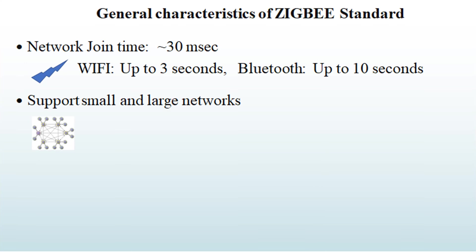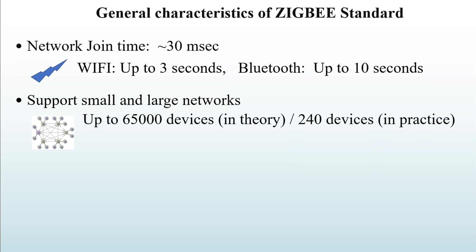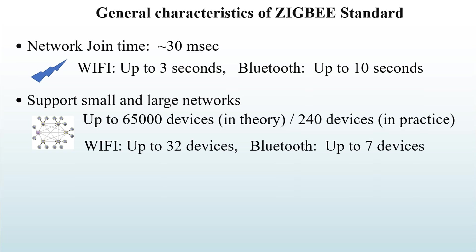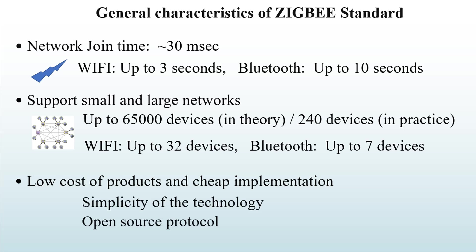Zigbee networks support small and large networks — from several devices to thousands. Zigbee can support up to 65,000 devices in theory, with 240 devices being the practical maximum. Compare this to Wi-Fi's maximum of 32 devices and Bluetooth's maximum of 7. Zigbee also offers low cost of products and cheap implementation due to the simplicity of the technology and its open source nature — manufacturers don't pay license fees or royalties.